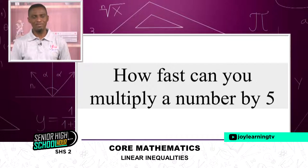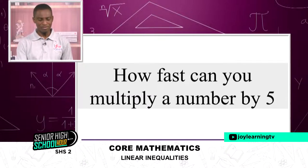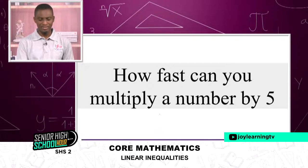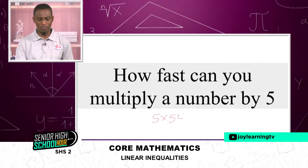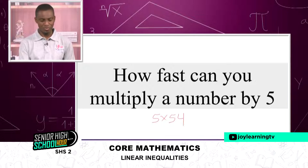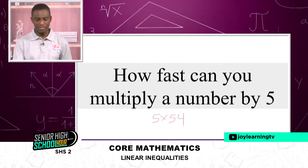Today we want to look at how fast we can multiply a number by five — in three seconds, can you do this? For example, if I say multiply five times 54, how fast can you do this in less than five seconds? We'll learn the trick in two ways: multiplying five by an odd number and five by an even number.